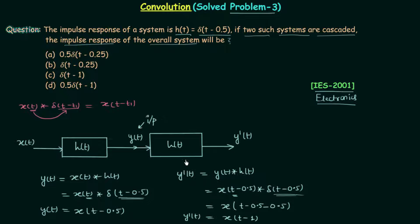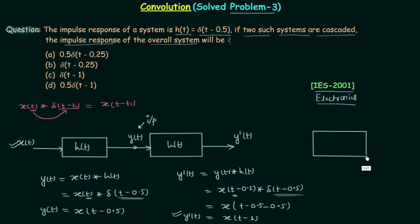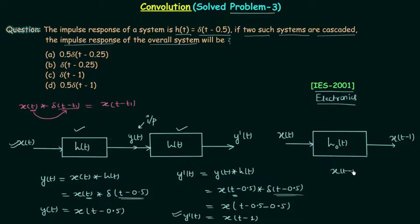So x(t - 1) is the output of the overall system. However, the question is not asking for the output but for the impulse response of the overall system. We have the output x(t - 1) and the input x(t), so let's calculate the overall impulse response h₀(t). The input to the overall system is x(t) and the output is x(t - 1), so x(t - 1) = x(t) convolved with h₀(t).